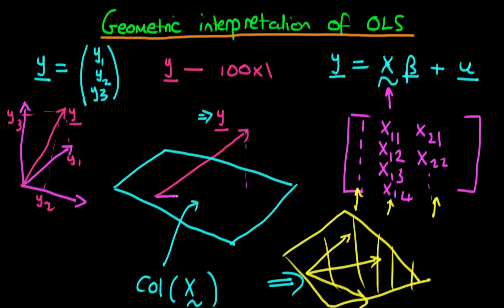We can represent that orthogonal projection of y onto the plane by a vector which I'm going to call mu hat. Because essentially what least squares does is it minimizes the square distance between mu hat and y, we know that these two things are going to be orthogonal, which means that y minus mu hat is going to be orthogonal to the column space of X.